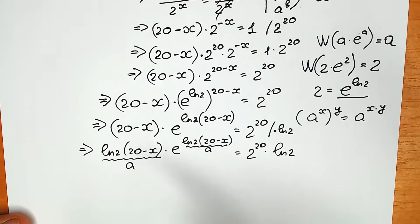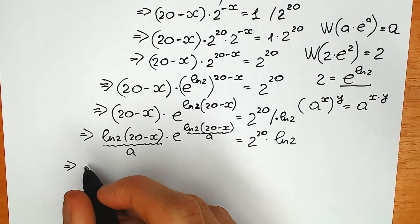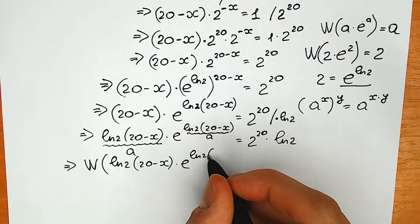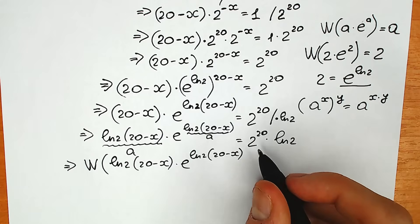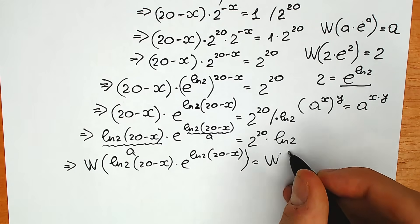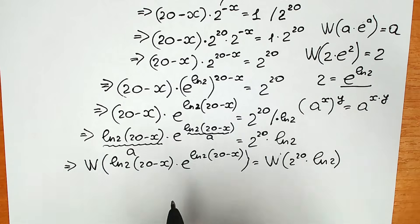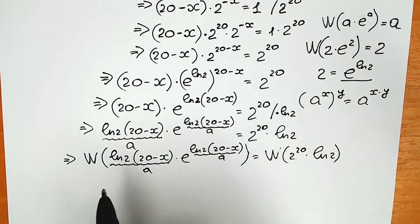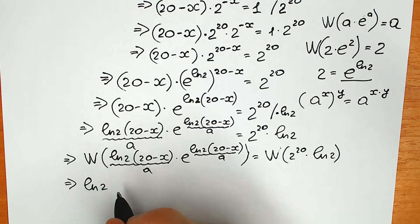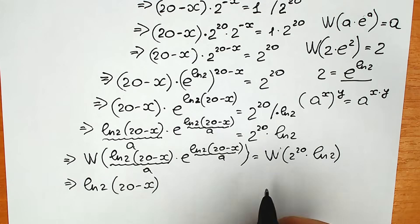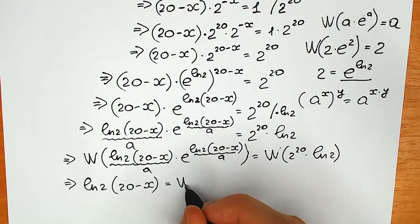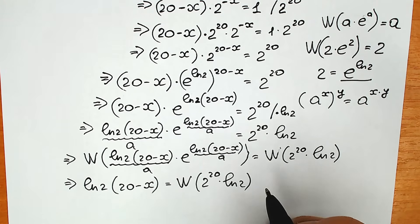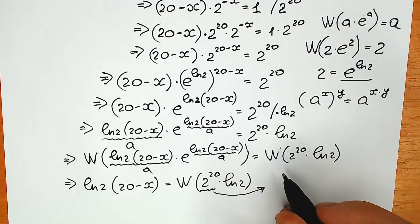We can now apply the Lambert W function to both sides. Lambert W of (natural log 2 times (20 minus x)) times e to the power (natural log 2 times (20 minus x)) equals Lambert W of (2 to the power 20 times natural log 2). On the left side, applying W gives us simply natural log 2 times (20 minus x). Now instead of 2 to the power 20, I recommend writing it as 2 to the power 4 times 2 to the power 16.